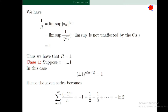The radius of convergence of a power series is given by the formula 1/R = lim sup of |a_n|^(1/n). Since the limit supremum is not affected by the zeros, we can write 1/R = lim sup of (1/k)^(1/n). The sequence (1/k)^(1/k) converges to the limit 1. Therefore the limit superior equals 1, so the radius of convergence is 1.